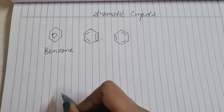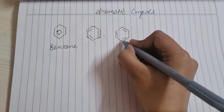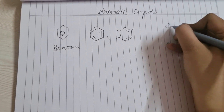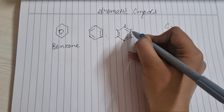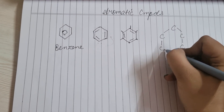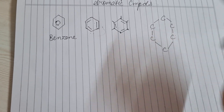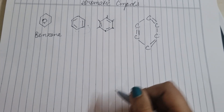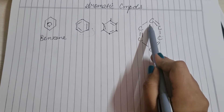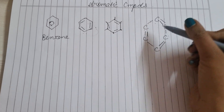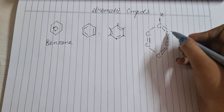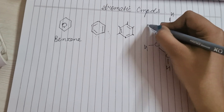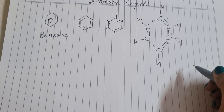Benzene की naming सीखते हैं। Benzene के corners पर carbons होते हैं — कुल 6 carbons। Double bonds alternate position पर लगते हैं। हर carbon के पास 3 bonds already हैं, तो valency पूरी करने के लिए एक-एक hydrogen लगाना है। यह benzene का structure है।